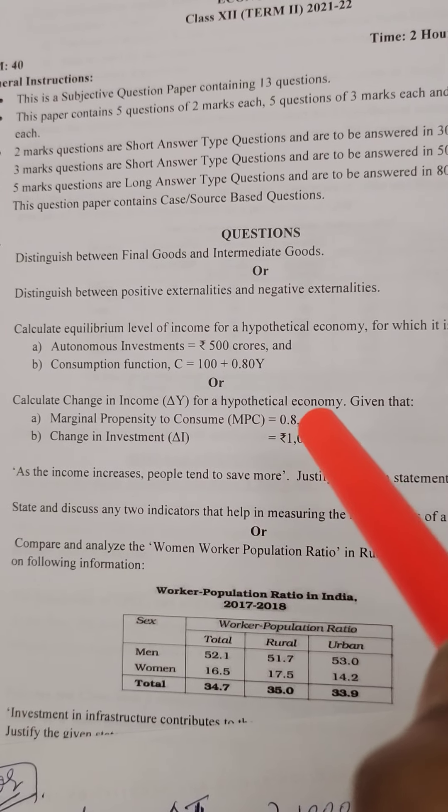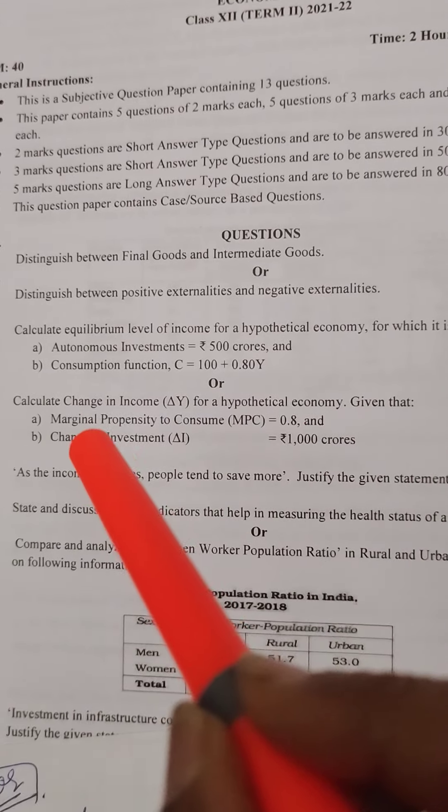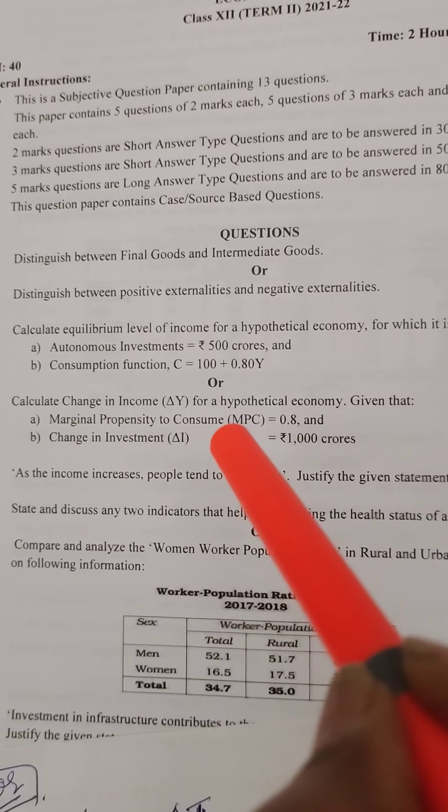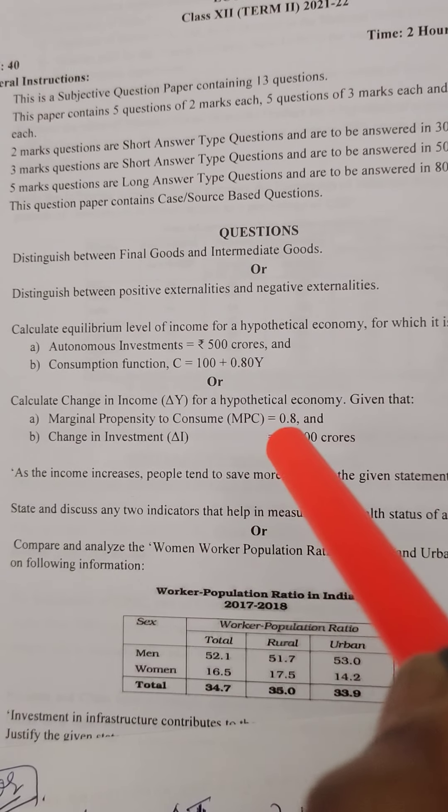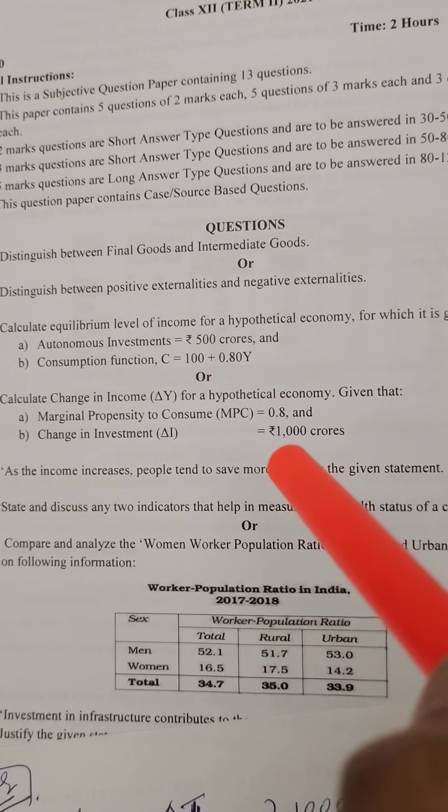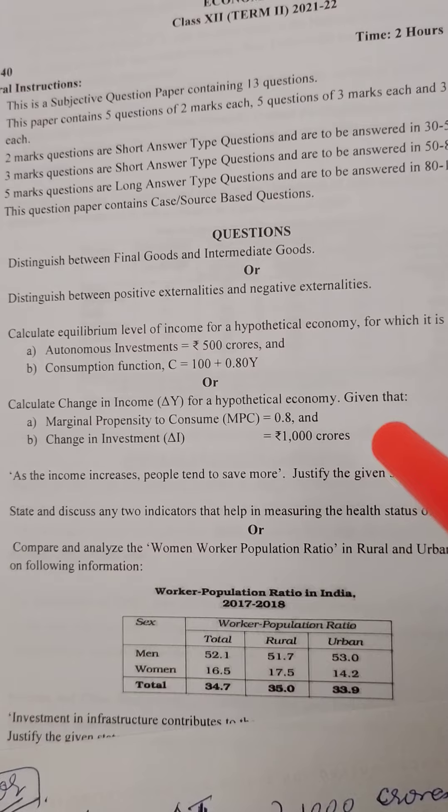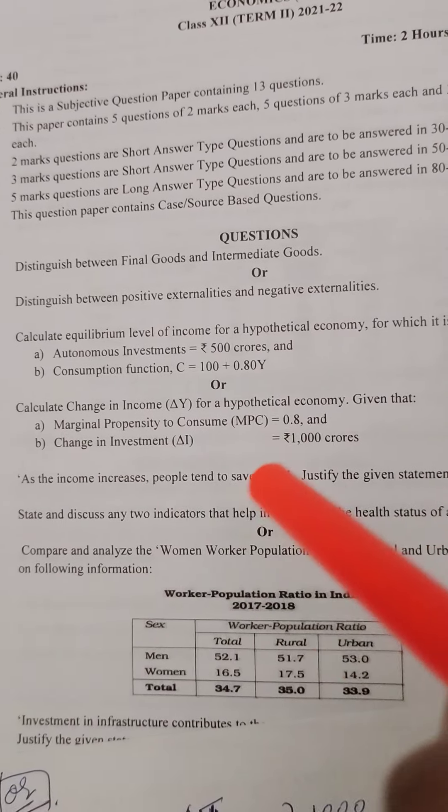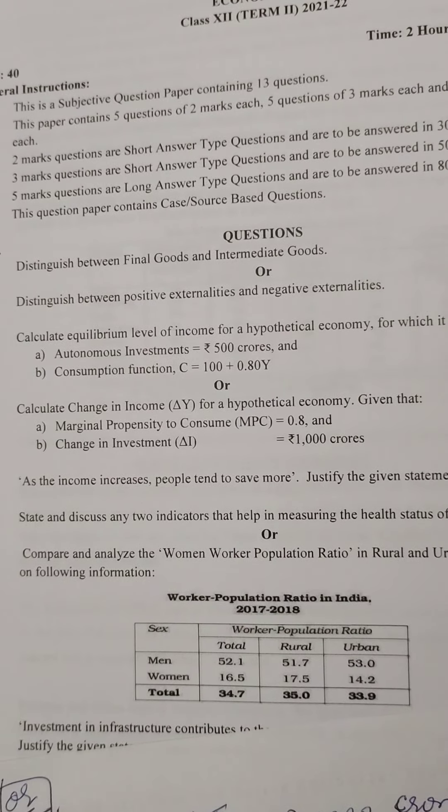The question states: Calculate change in income for a hypothetical economy, given that marginal propensity to consume (MPC) = 0.8, and change in investment is 1,000 crores. We just solve it. It's simple.